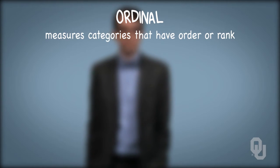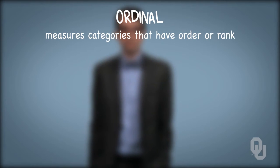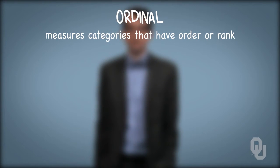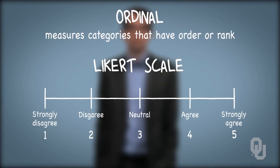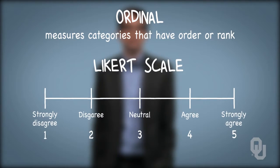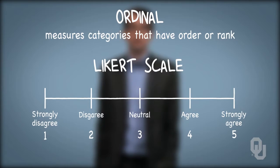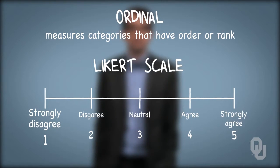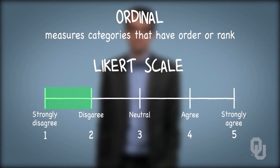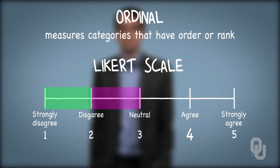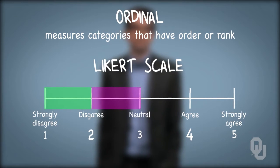A well-known numeric example that is regularly mishandled deals with questionnaires measured on a Likert scale — the common 1-to-5 or 1-to-10 ordered scale ranging from strongly disagree to strongly agree. The distance between 1 and 2 is not necessarily the same as the distance between 2 and 3, nor is an answer of 4 meant to be twice the strength of an answer of 2.